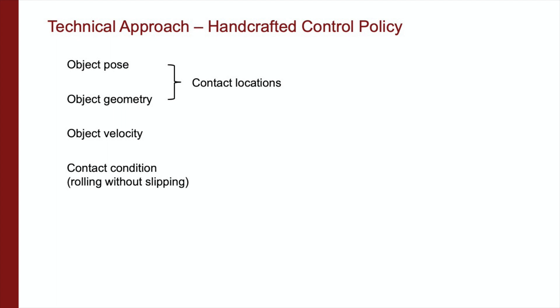Object geometry and pose are necessary to calculate the contact locations, which determine the relationship between the joint motions and given contact motions on the rollers. This information can be subsequently used to map the desired object motion to the motions at the contact point on the object. Acquiring the contact condition of rolling without slipping means that the contact velocity on the object and the contact velocity on the roller are equal. Therefore, inverse kinematics can be used to calculate the joint velocities required for the desired object motion.